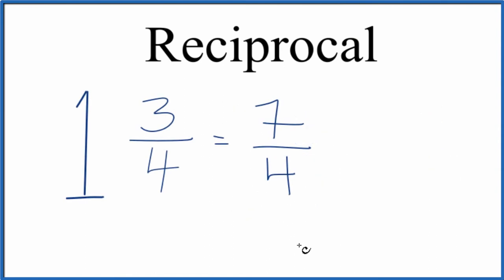When we find reciprocals, we're really just taking one over the fraction. So one over seven-fourths, that's the reciprocal. But the easy way to do this is just to flip the seven and the four. So instead of seven over four, we have four over seven.